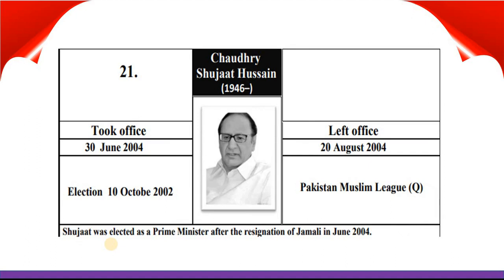Chaudhry Shujaat Hussain took office 13th June 2004 and left office 20th August 2004. He was elected in elections on 10th October 2002 and belongs to Pakistan Muslim League Q. Shujaat Hussain was elected as Prime Minister after the resignation of Jamali in June 2004.